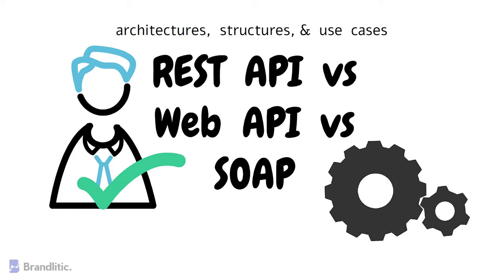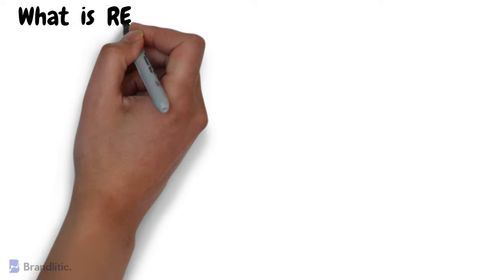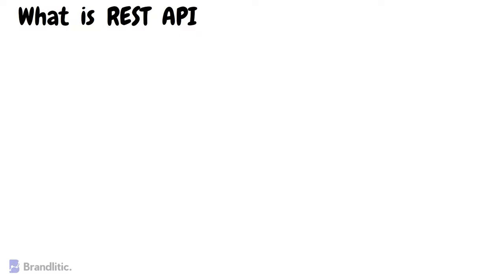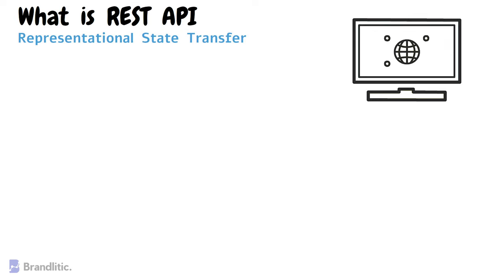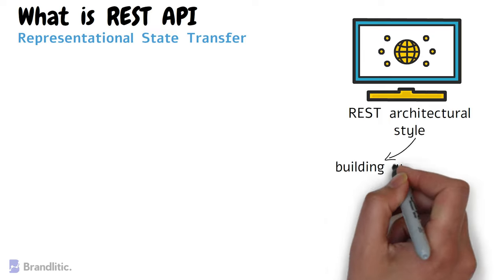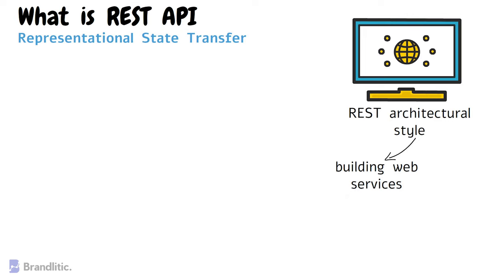Let's get started. First off, what is REST API? Well, REST stands for Representational State Transfer, and REST API is a web-based application programming interface that follows the REST architectural style. The primary purpose of REST is to provide an architecture for building web services that can be consumed by various clients, including web, mobile, and desktop applications.